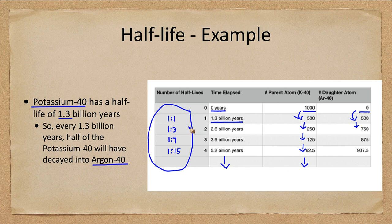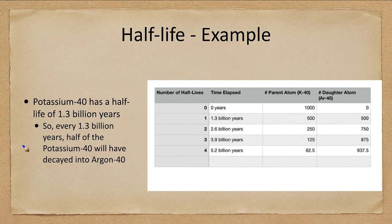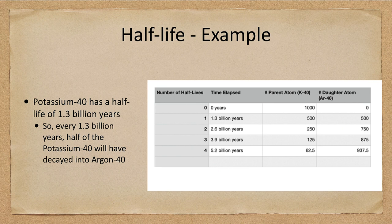If you're somewhere in between, you can estimate — for example, a one-to-two ratio would be somewhere between 1.3 and 2.6 billion years. There is an exact way to calculate this using exponentials, but a simple table like this gives a very basic approximation of the absolute age of the sample. This can then be used to calibrate the crater counts: once we figure out that a certain crater density per square kilometer relates to a certain age on the moon, we can use that to estimate ages of other objects in the solar system for which we don't have samples.